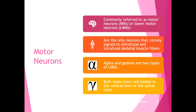Motor neurons are commonly referred to as lower motor neurons, meaning they originate at the ventral spinal nerve root and go out to the muscles — versus upper motor neurons or motor tracts, which originate in the cerebral cortex and come down to the spine. Lower motor neurons are the only neurons that convey signals to extrafusal and intrafusal skeletal muscle fibers. Upper motor neurons do not connect directly to muscles; they connect to interneurons in the spine, which then connect to lower motor neurons.